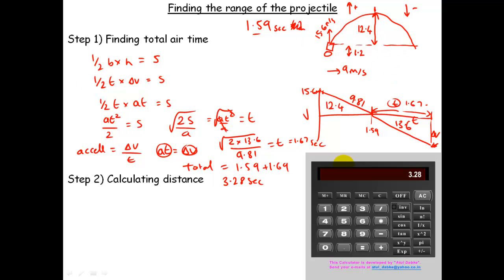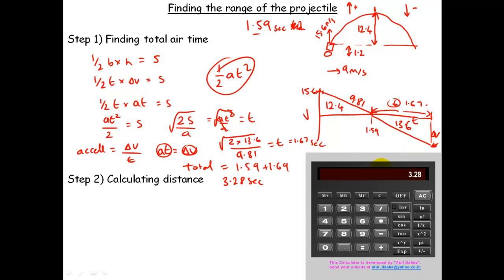Do you recognize what we just derived? It's in the equations of motion — half at squared — straight out of one of the equations of motion. So if you want to take a shortcut, just use the equations of motion. But it's worth understanding and doing it by this graphical method because it gives you a deeper insight into what's happening in projectile motion.